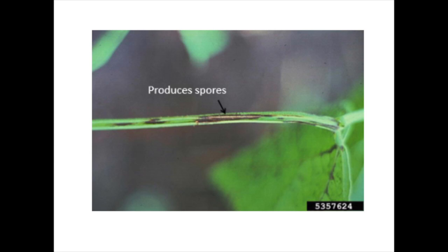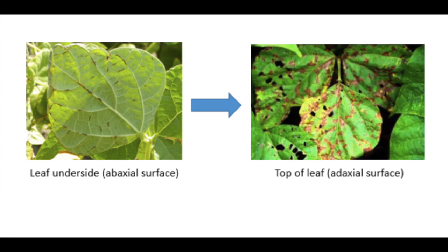Under wet conditions, the pathogen then produces masses of pink spores within these lesions that disperse via wind and water to infect other nearby hosts.